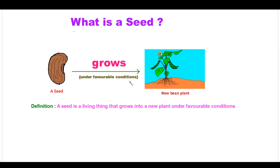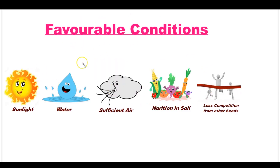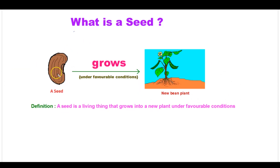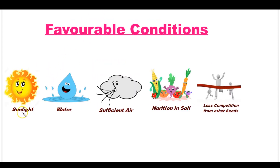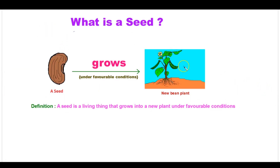So what are those favorable conditions which are required for a seed to grow into a new plant? There are five favorable conditions which help a seed to grow into a new plant. Those are sunlight, water, sufficient air, nutrients in soil, and less competition from other seeds.